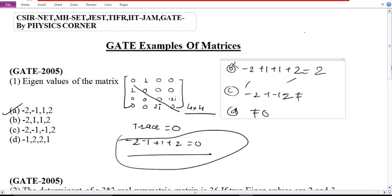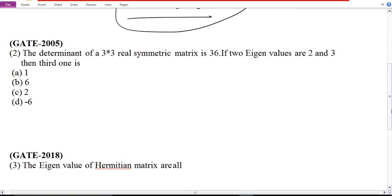The problem definition is satisfied. Now question number second, which was also asked in 2005. The determinant of a 3 by 3 real symmetric matrix is 36. Now, lambda 1, lambda 2 into lambda 3. Product of eigenvalues is nothing but the determinant.